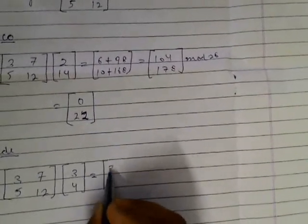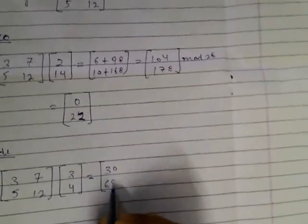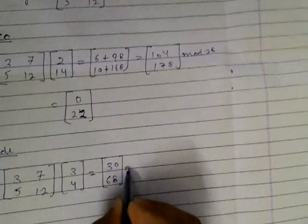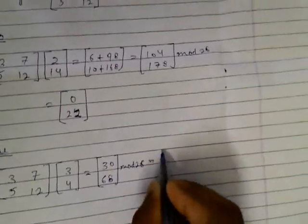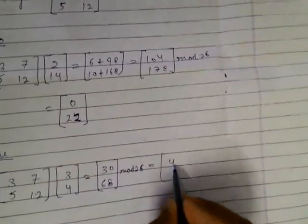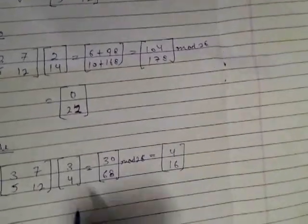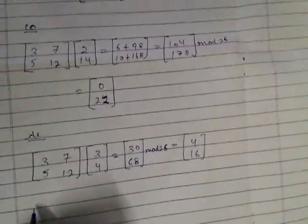Doing it directly: 29, 68, and mod 26 we get 4 and 16.